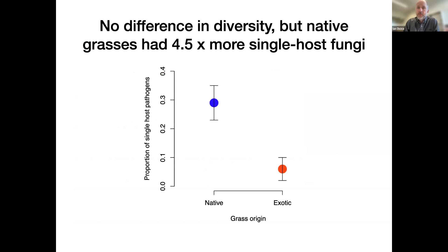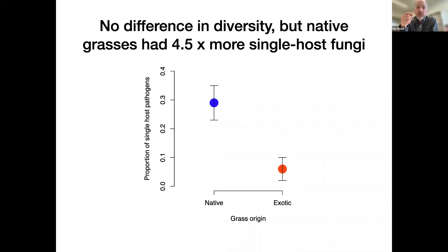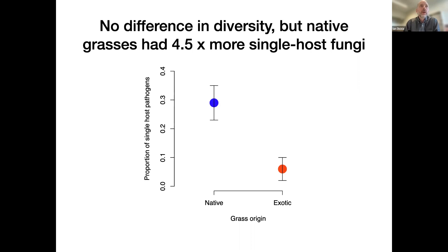What we did find was something far more intriguing. If we looked at specificity — what proportion of the pathogens on a particular grass species were only found on that grass species — in native grasses it was nearly 30%, whereas in exotic species it was four and a half times lower. So the exotic species, although the overall community was not different, were associating primarily with the generalists in that community and had very few specific associations. That theme of exotics associating with widespread generalists is going to come up over and over again.